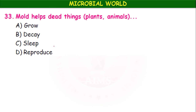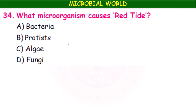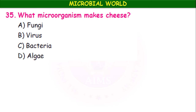Mold helps dead things — plants and animals — by causing decay and decomposition. What microorganism causes red tide? Bacteria, protists, algae, or fungi? It is algae — red algae — which cause red tide.